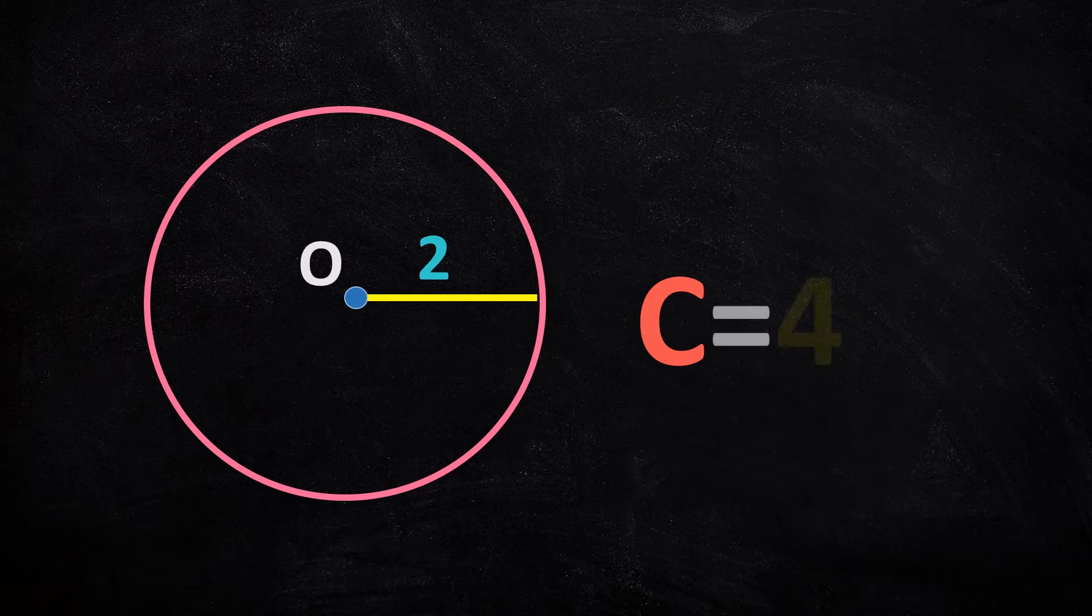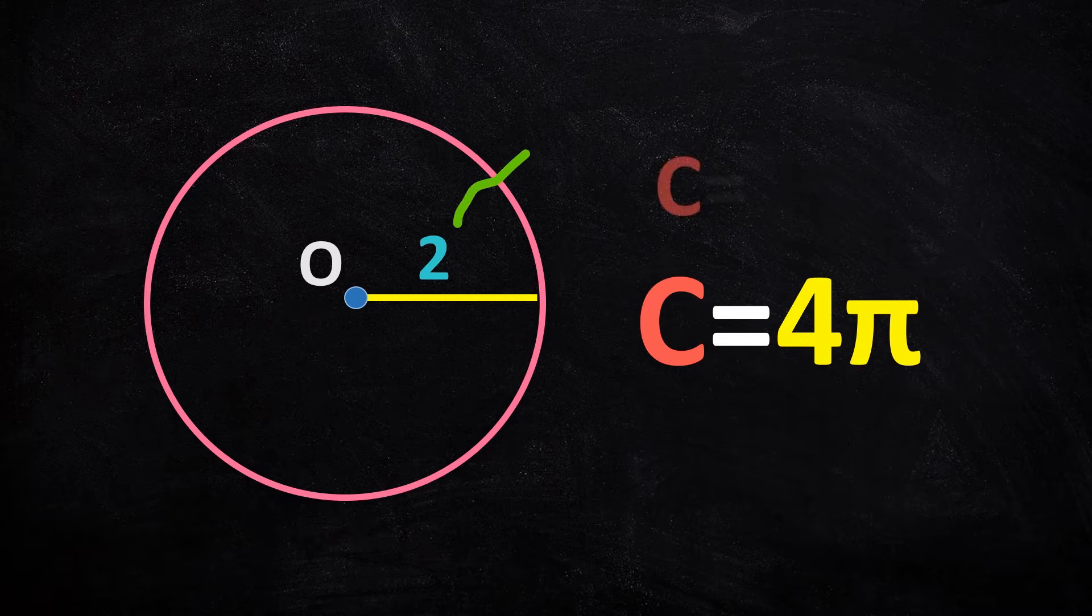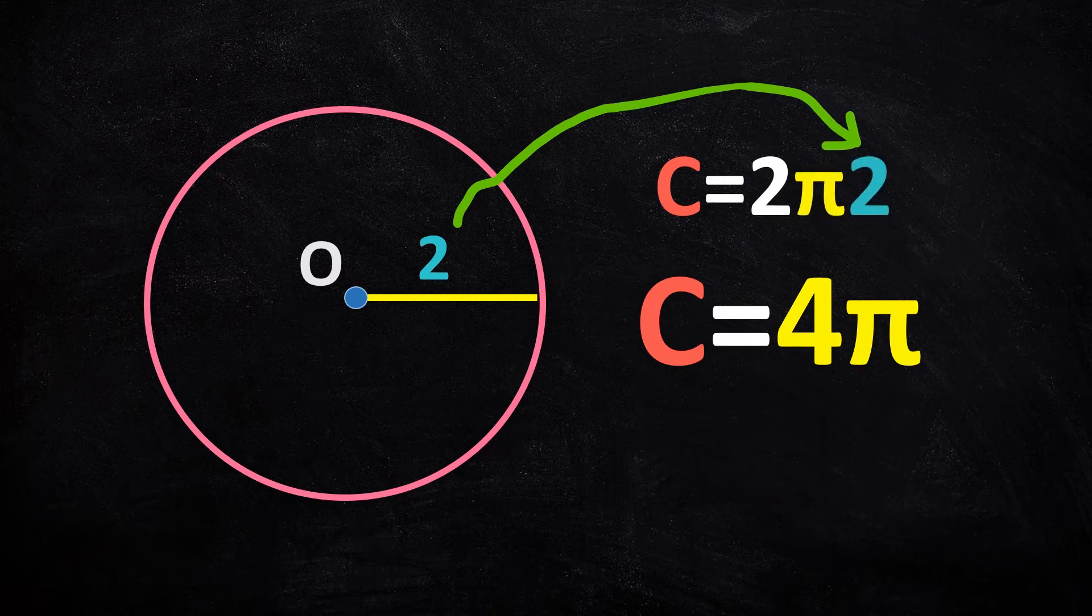The circumference of the circle is 4 pi. The radius is 2. 2 times pi times 2 is 4 pi.